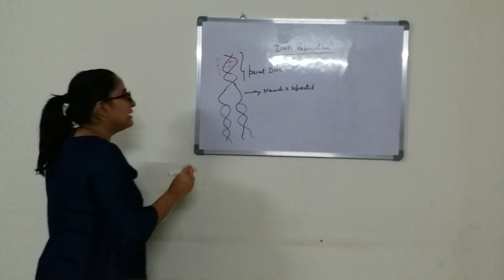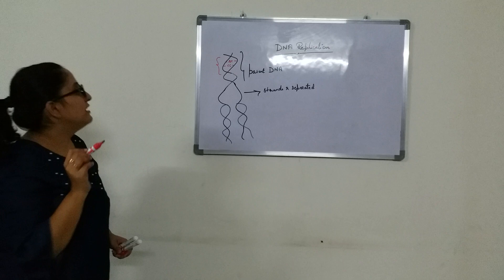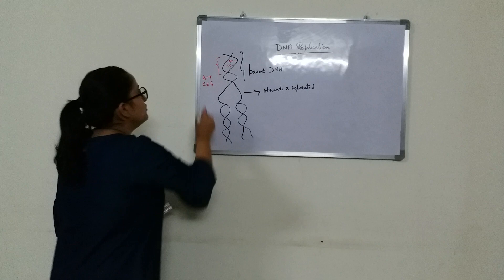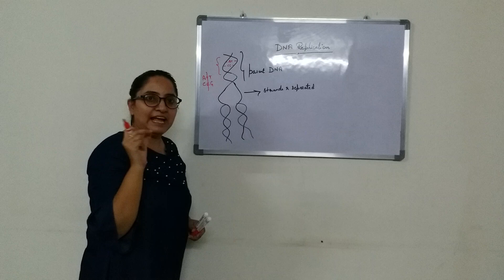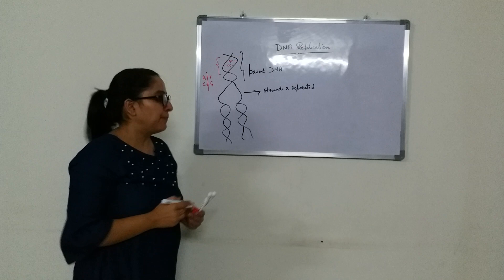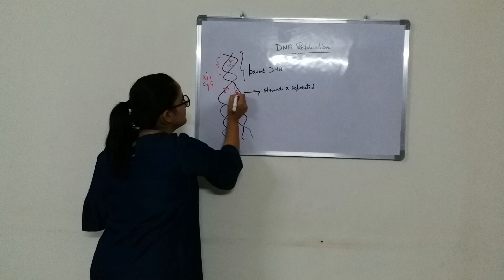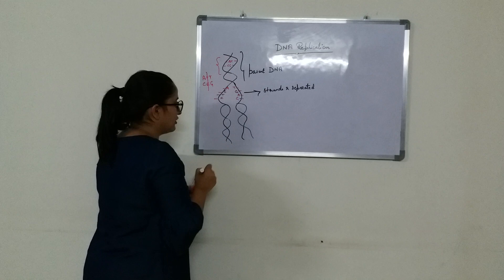To separate the two strands of DNA we have to break the hydrogen bonds — A and T have a double bond, and C and G have a triple bond. We have to break these bonds and separate the two strands, by which each strand of the parent DNA will act as a template and form a new synthesized DNA.